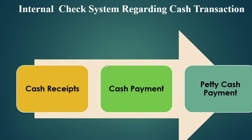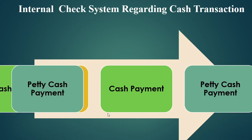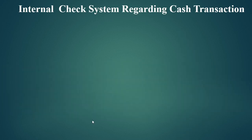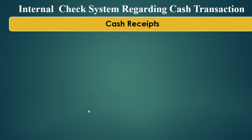These kinds of things necessitate the internal check system for cash transactions. This cash transactions internal check system can be learned in three forms: cash receipts, cash payments, and petty cash payments. These three will be learned in detail.